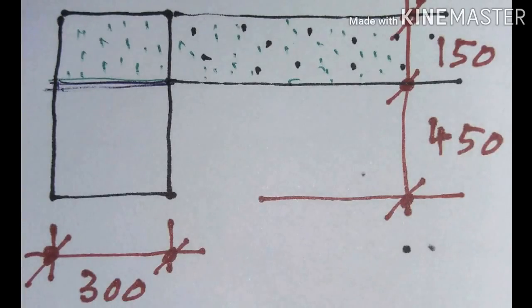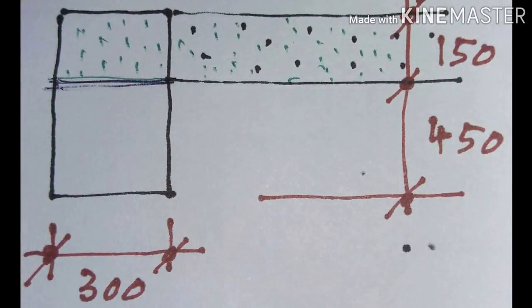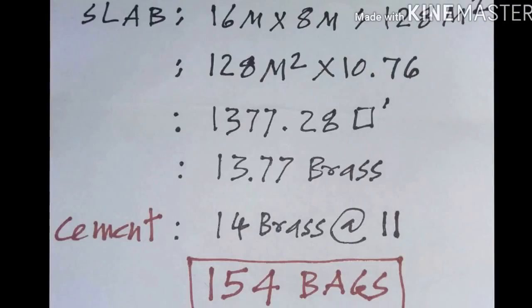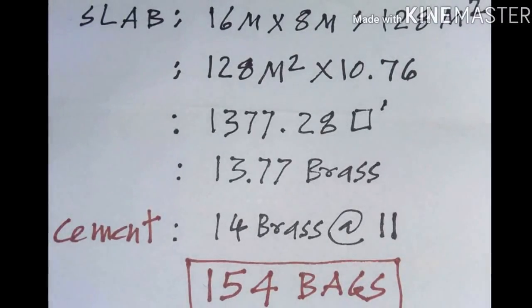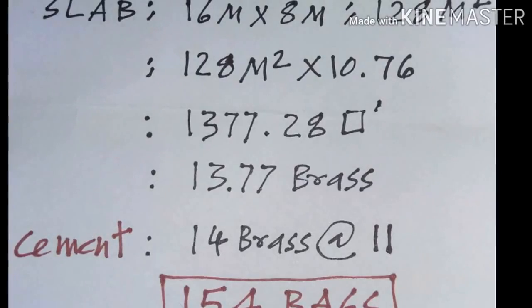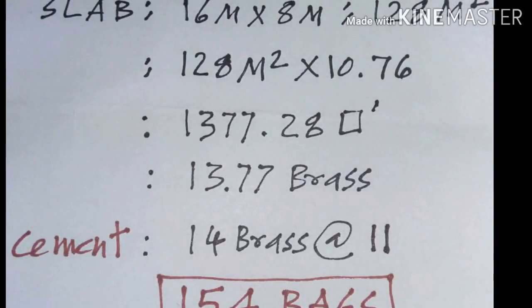The slab area is 16 meters by 8 meters, which equals 128 square meters. Multiplying by 10.76 gives 1377 square feet, which comes to 13.77 brass — nearest to 14 brass. So we are working out materials for a slab of 14 brass, or 1377 square feet.